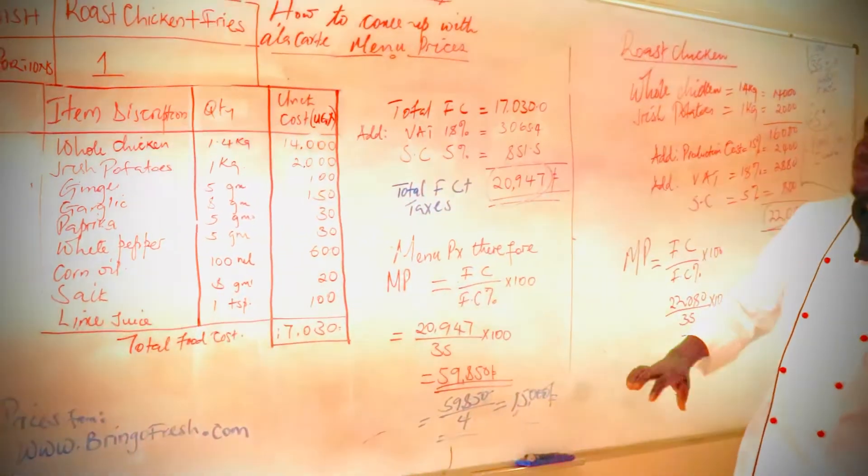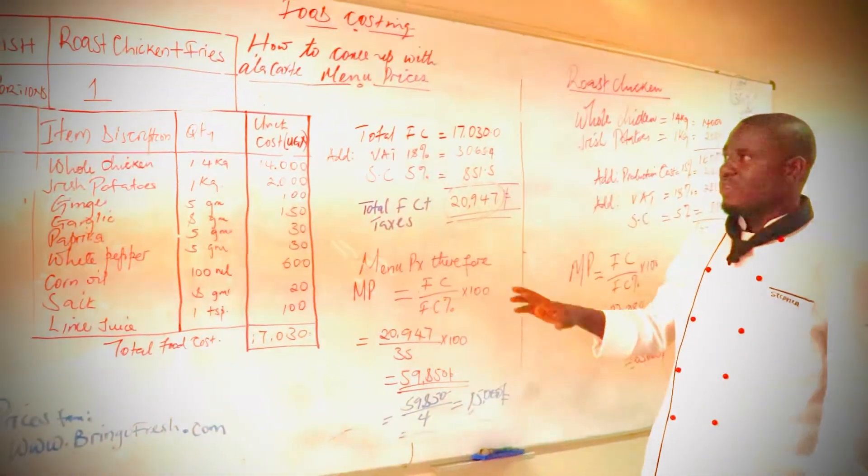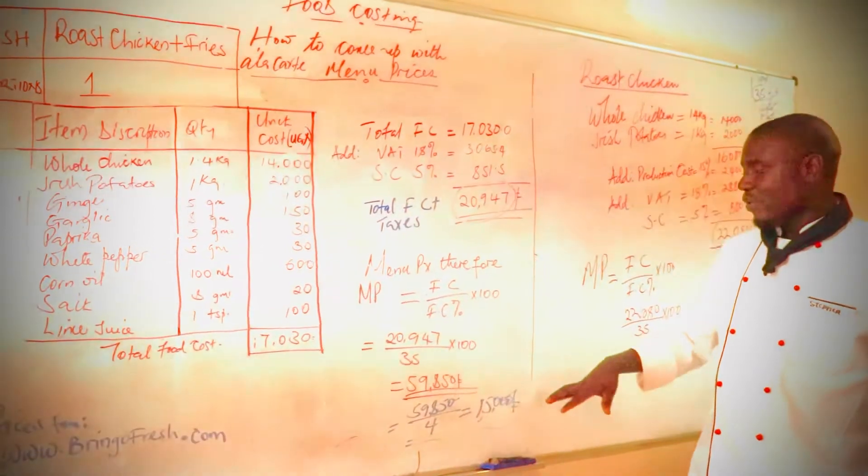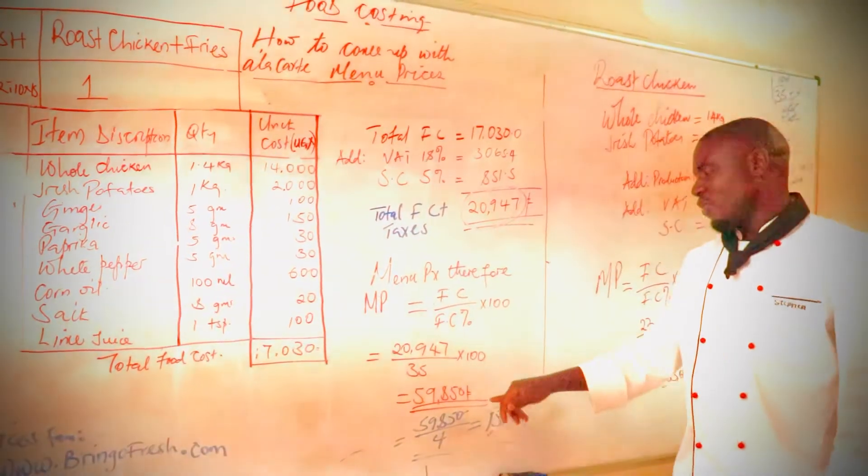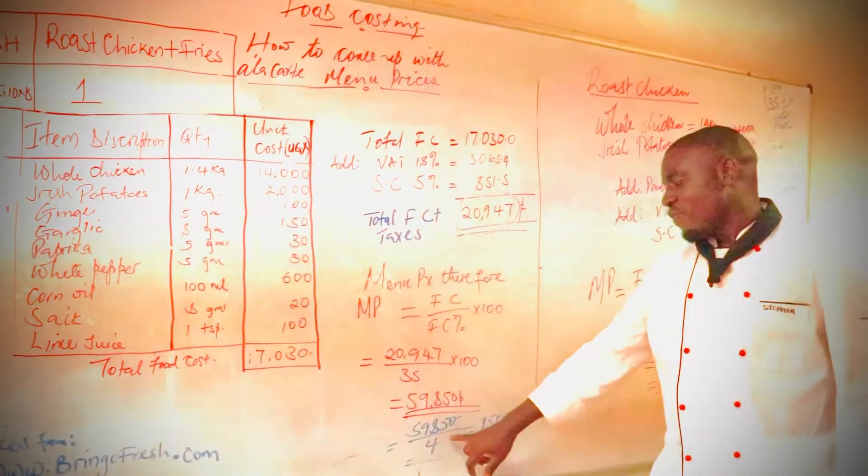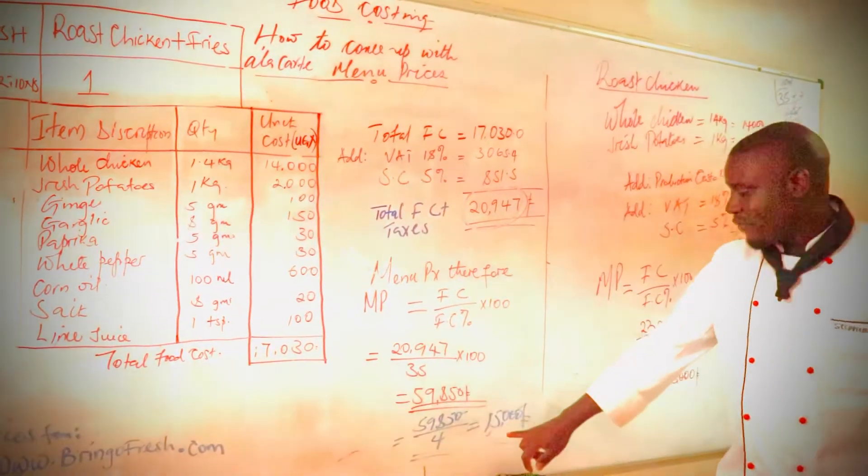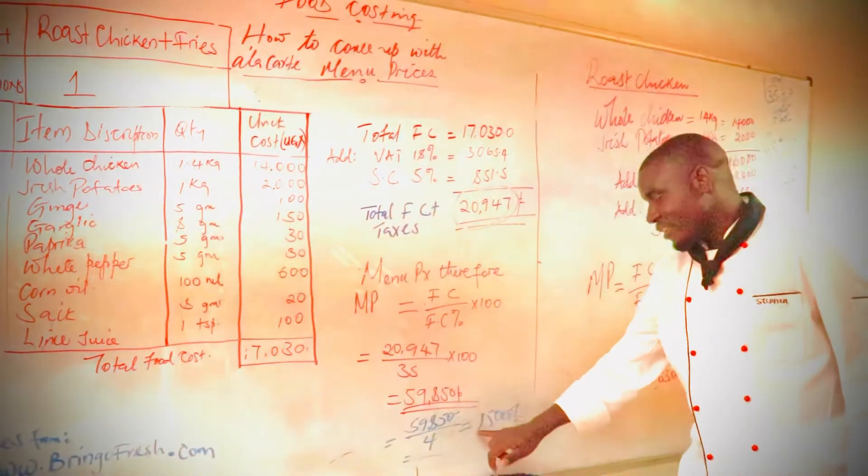So if we cut the chicken into quarters we will get four portions. So we divide the total amount of this by four which is giving us 15,000 per quarter chicken with chips.